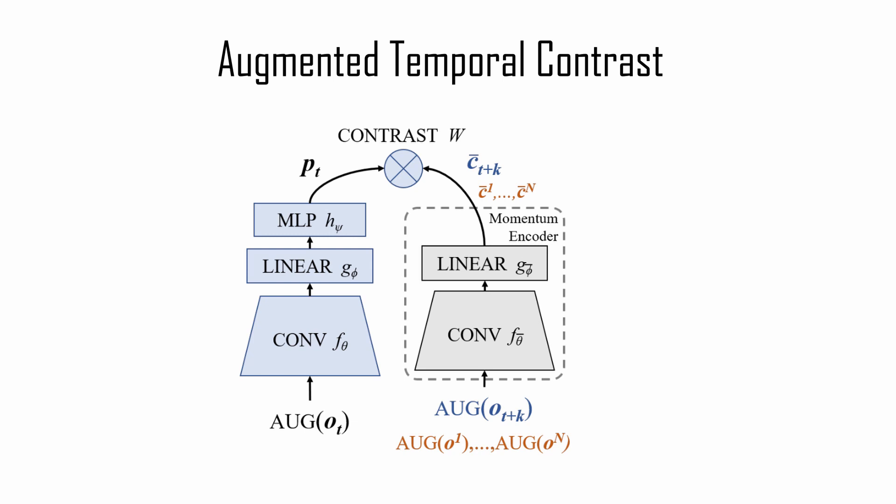Also, they use a different encoder for the anchor observation, that is the current observation, and a positive observation, the observation at time t plus k. Specifically, for the second encoder, they use a momentum encoder, parameterized as a slowly moving average of the weights of the first encoder.